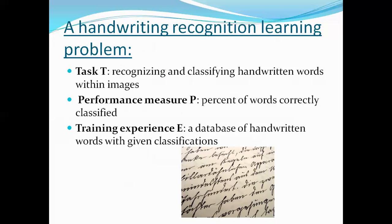In the handwriting recognition learning problem, task T is recognizing and classifying handwritten words within images. Performance measure P is the percentage of words classified correctly. Training experience E is a database of handwritten words with given classifications — for example, knowing that a certain image represents the letter A. This is the task, performance, and training experience for handwriting recognition.